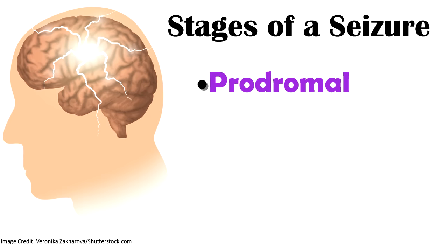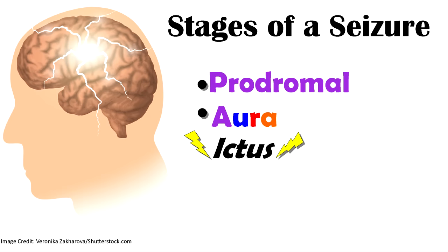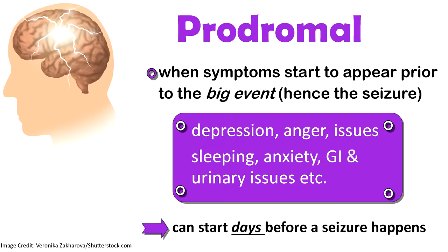The stages include the prodromal, aura, ictus, and post-ictus. The prodromal is when symptoms start to appear prior to the seizure — days before — and patients can become depressed, have anger, issues sleeping, anxiety, or gastrointestinal and urinary issues. Many patients become aware of these warning signs and can prep themselves for a possible seizure.